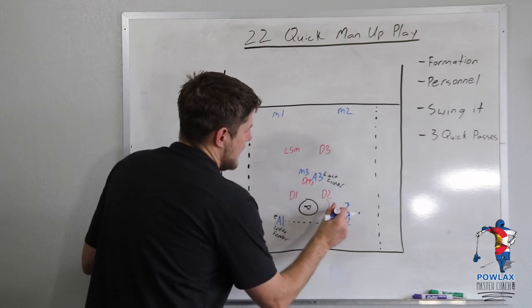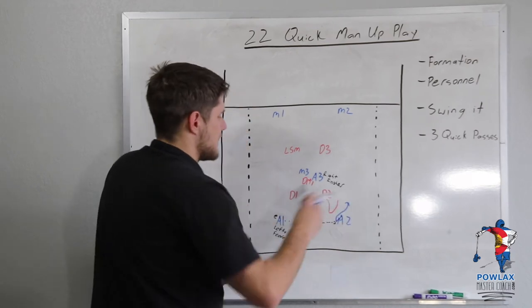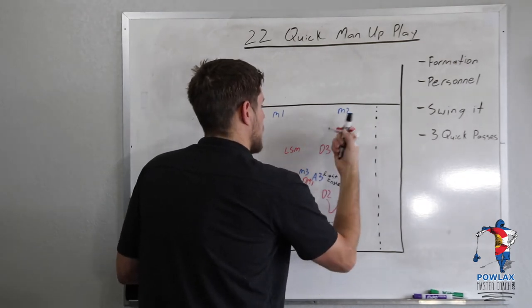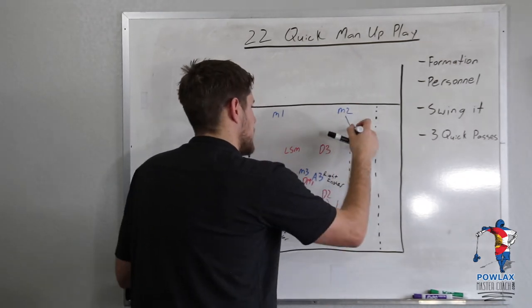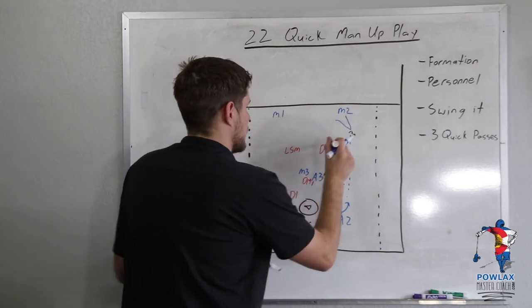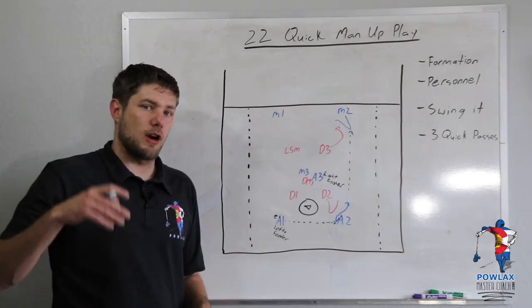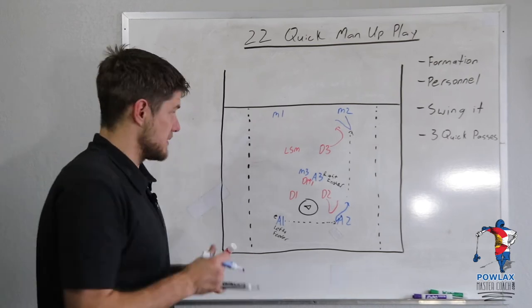So as this happens, D2 would come out to play him. He'd have to run with him. Now as A2 passes up to M2, M2 would want to come and get the ball. He would then run over. We're going to draw D3 out here. And from this position, this is where we're going to start our three quick passes.